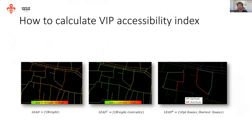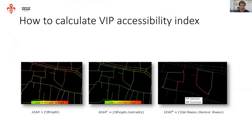For the larger scale of an area, we use one of three indices developed during this research. The first is based only on the weight of the street. The second also takes into account the centrality of the road, meaning that a more central road has greater impact on total accessibility. The third method is the ratio between the optimal route and the shortest route — in an ideal situation, this ratio should be one.